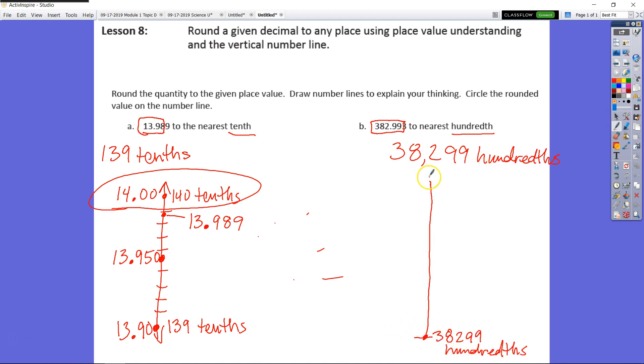And going up, our endpoint at the top, we'll just count out one more, which would be 38,300 hundredths. So in between these numbers here, if I just add my extra zero place just to find my midpoint, I know that this is the maximum number of hundredths, which would be 383 and 0 hundredths.